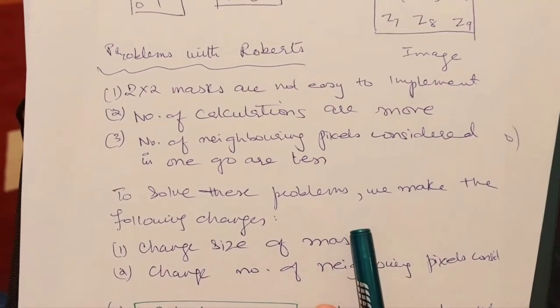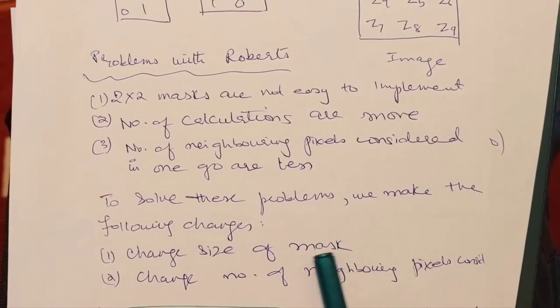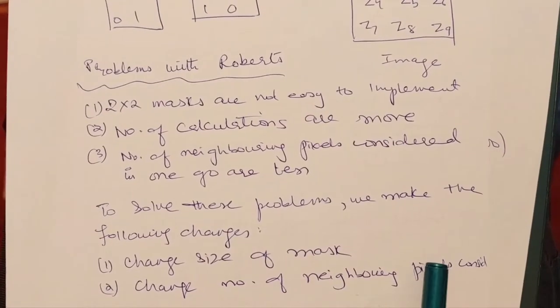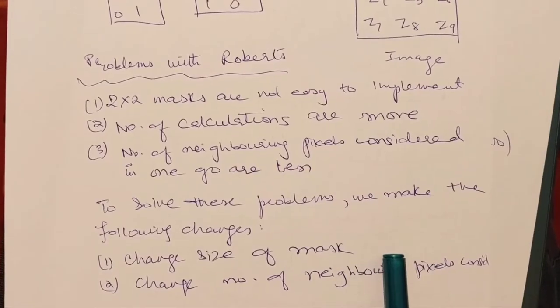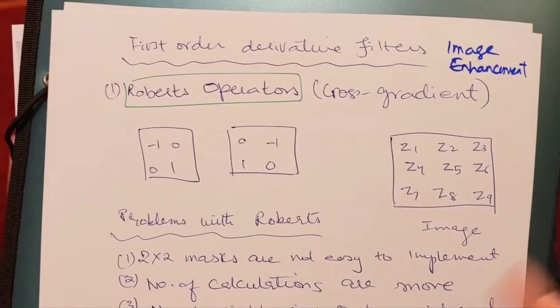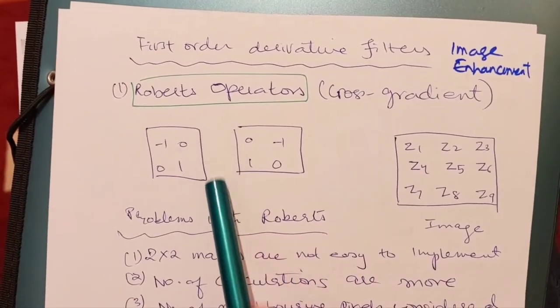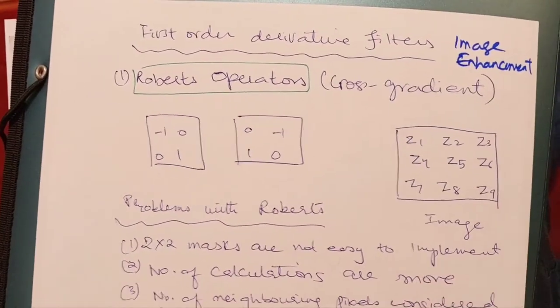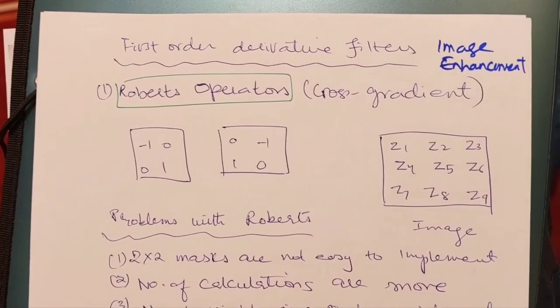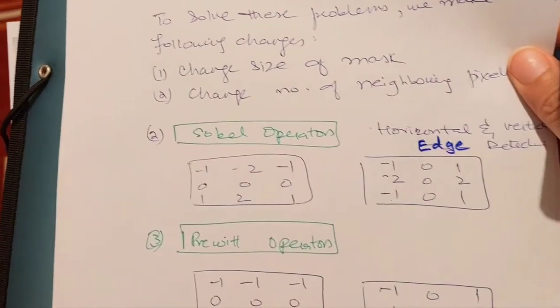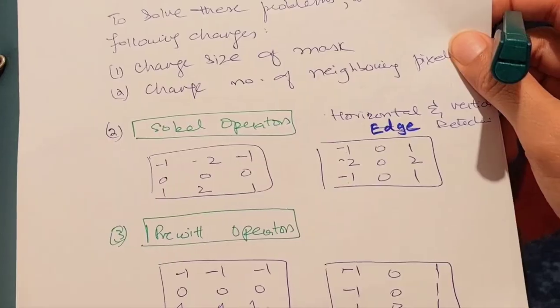To solve these problems, we can change the size of the mask and the number of neighboring pixels considered. When we make these changes, the operator becomes larger in size, and we are actually introducing another type of operator. That other operator is called the Sobel operator.